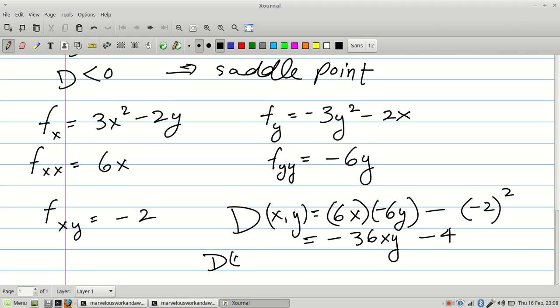If I plug in (0, 0), then this term vanishes. It's going to go away, and I'm just going to be left with negative 4, which is less than 0. So that means that (0, 0) is a saddle point.